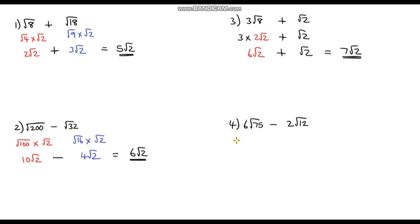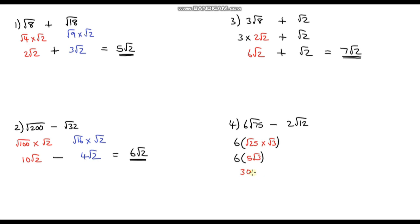Question 4, the hardest of all: 6 root 75 minus 2 root 12. First let's focus on the left-hand side. We have 6 out front, so we must not forget that. The square root of 75 can be rewritten as the square root of 25 times the square root of 3. The square root of 25 is 5, so this is 5 root 3. Multiplying all of that by 6 gives us 30 root 3 on the left-hand side.